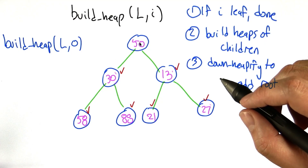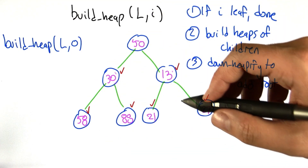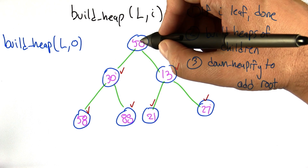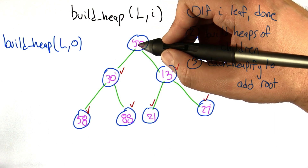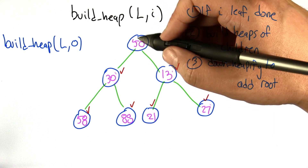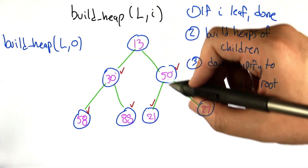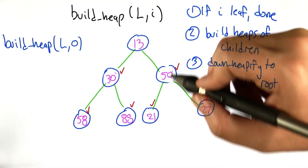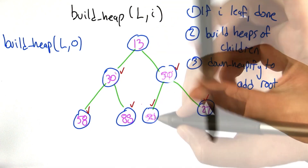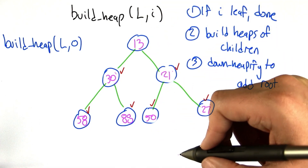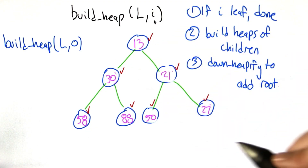Now we've got just the last step. To make the whole structure into a heap, we need to do downheapify on the root node, which means swapping it with the smallest of its children — that's the 13. Continuing recursively, swapping with the smallest until we reach the bottom, and that's done. So the whole thing is a heap. We made a heap!